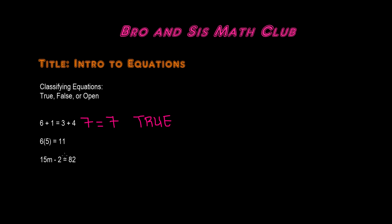The second equation says 6 times 5 is equal to 11. Well, we know that 6 times 5 is equal to 30. Therefore, it is not equal to 11. So this is a false equation.